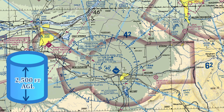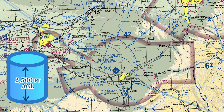This airspace in particular goes up to 4,000 feet MSL in the example, so if we take that as the top and subtract 2,500 feet AGL, we should be left with an elevation at the airport of roughly 1,500 feet — and that's pretty much exactly what it is. So delta airspace goes from the surface up to 2,500 feet AGL, with a radius of 5 nautical miles from the center.